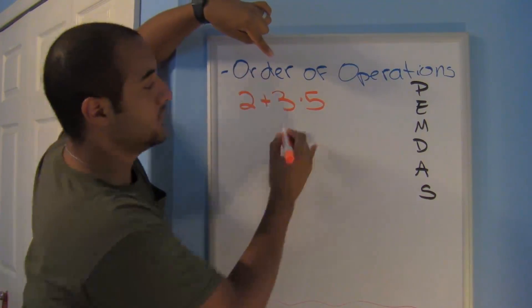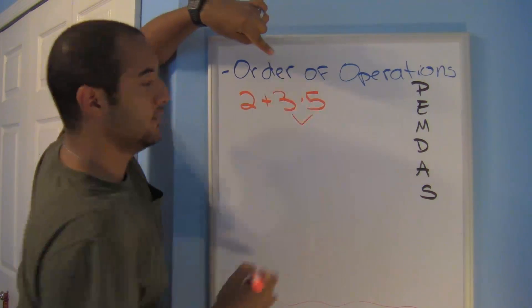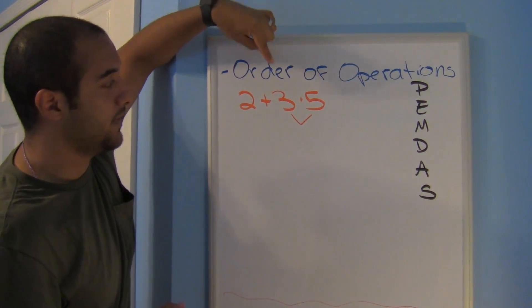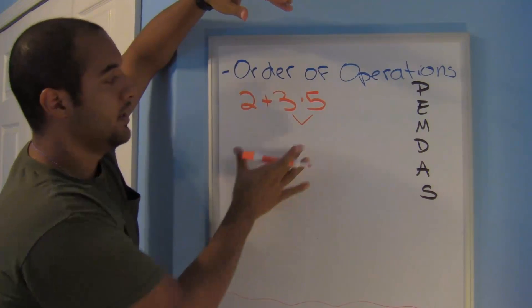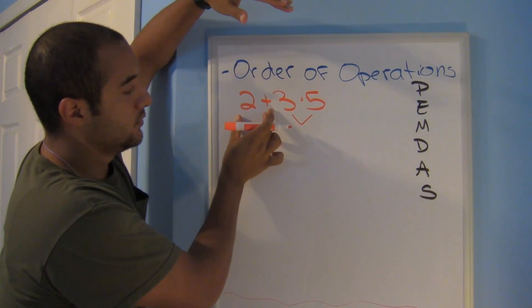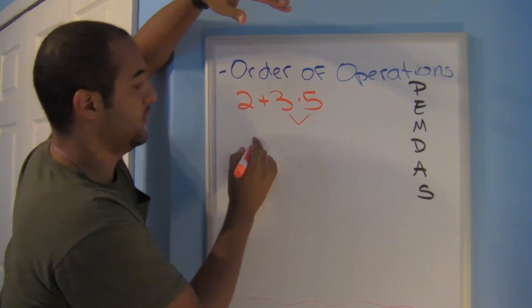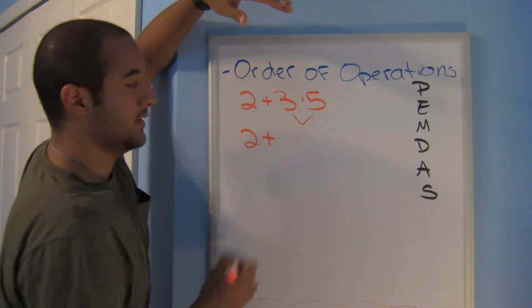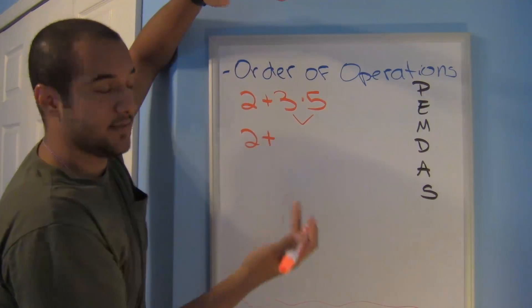And multiplication does go before addition. So that means that in this case, I need to do this first. I need to multiply 3 times 5. So what I'm going to do is anything that I don't use, I'm going to bring down. So 2 plus, I'm going to bring down 2 plus.